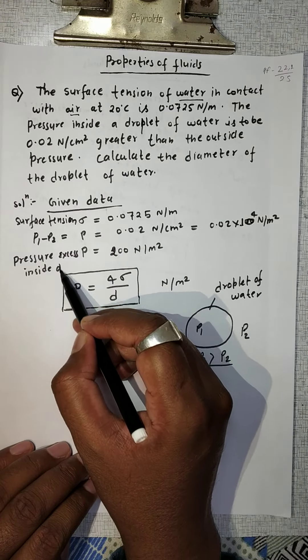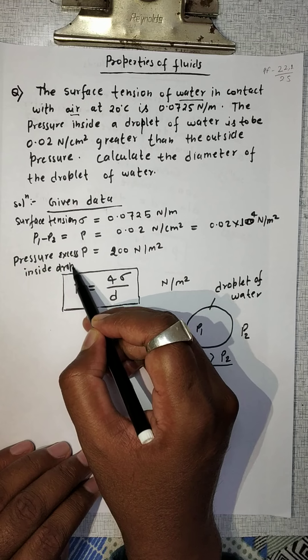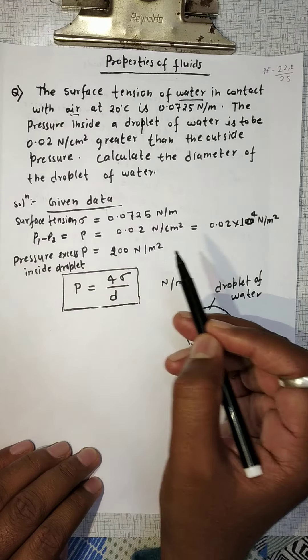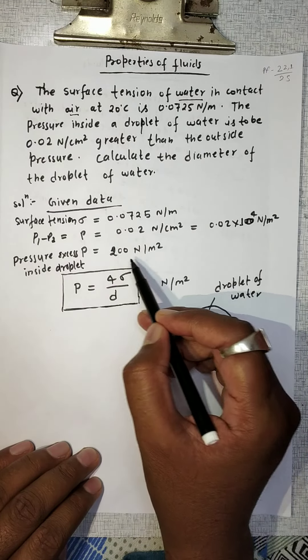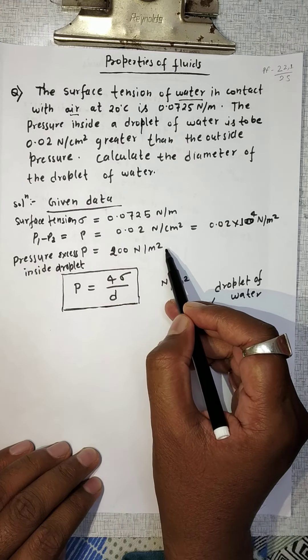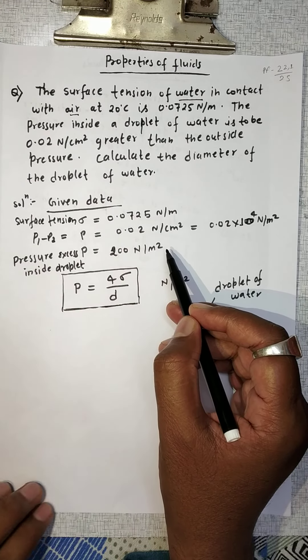Converting the excess pressure inside the droplet: 0.02 Newton per centimeter square equals 200 Newton per meter square.